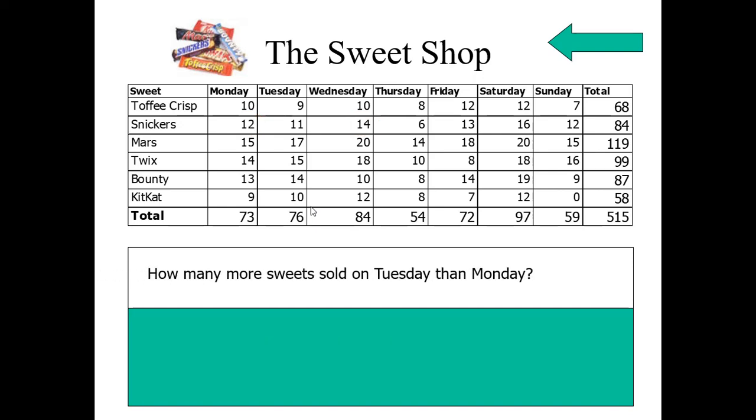Next question is how many more sweets sold on Tuesday than Monday? Sweets, total sweets. On Tuesday, 76. On Monday, 73. Hence, more sweets on Tuesday than Monday is 76 minus 73, 3.